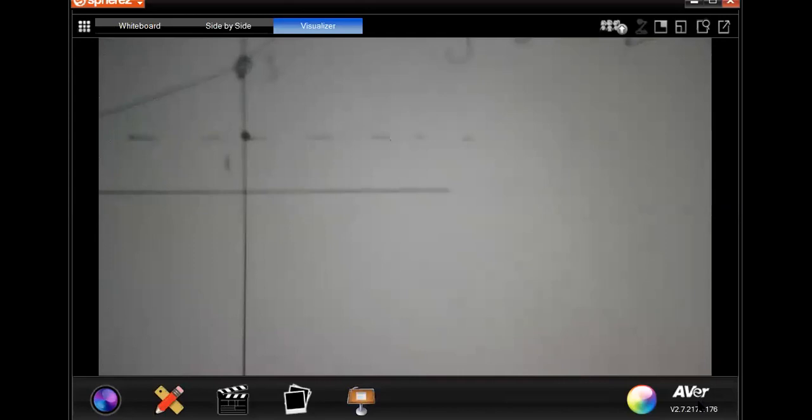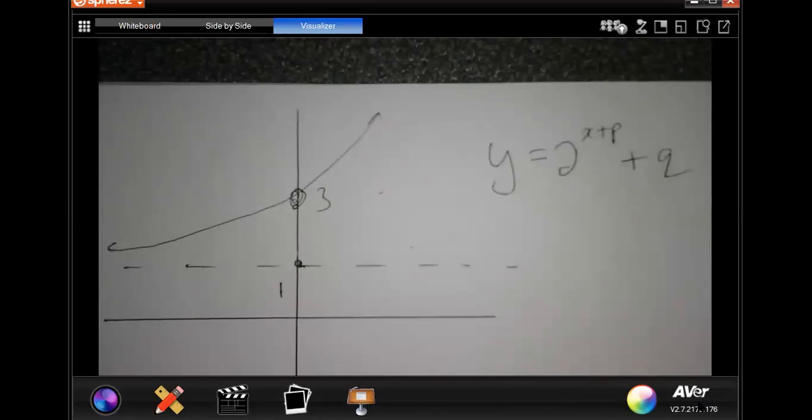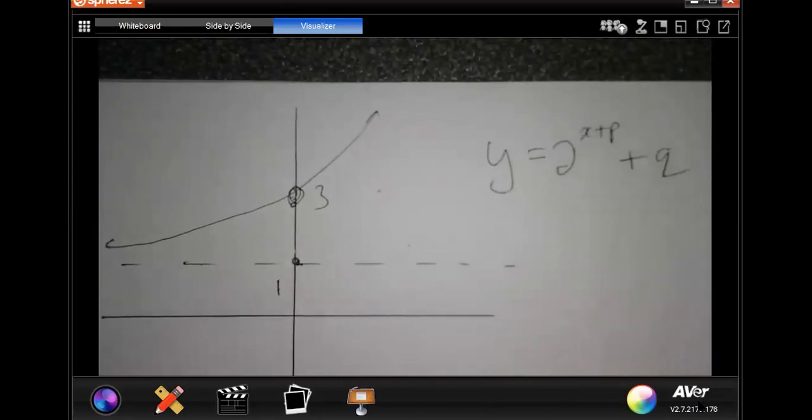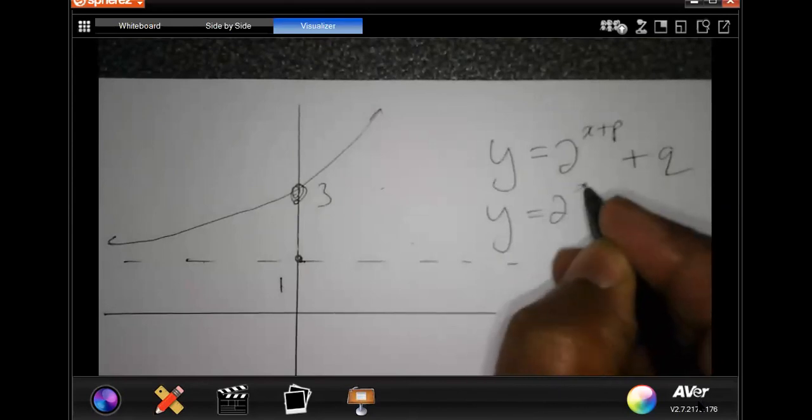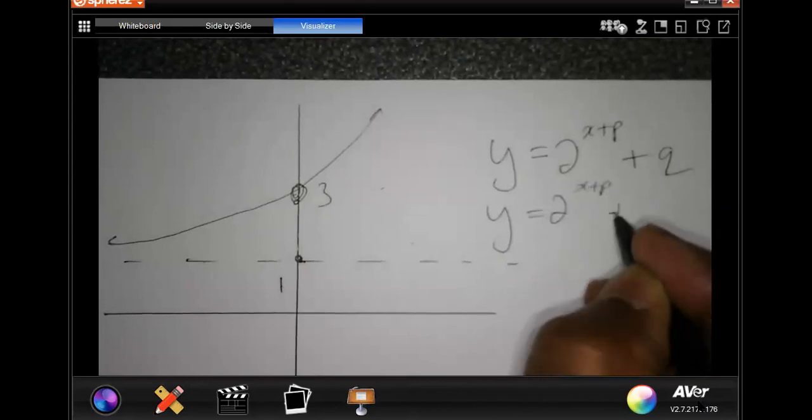All right, it's connecting. Just focus. First, start with the asymptote, so y equals 2 to the power x plus p plus 1.